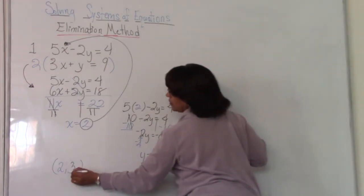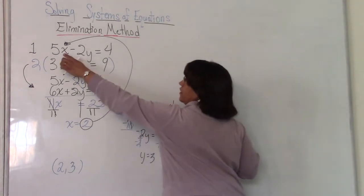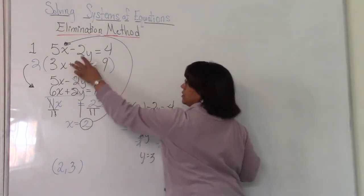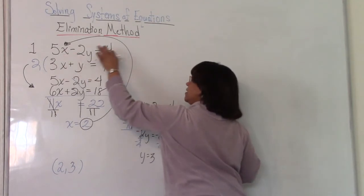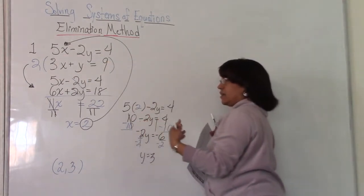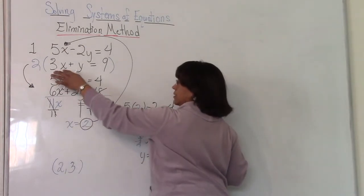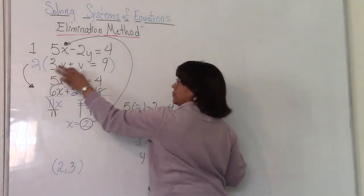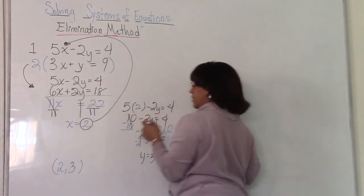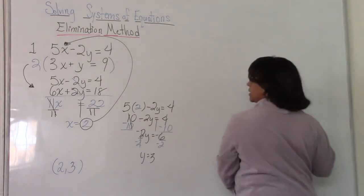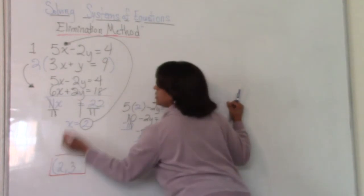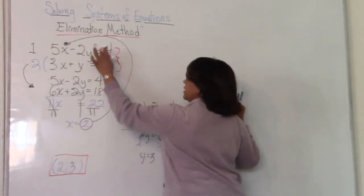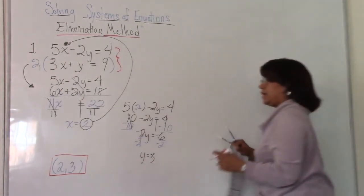I always like to check myself. So I'm going to go back here. 5 times 2 is 10. 2 times 3 is 6. 10 minus 6 is 4. Checks out so far. 3 times 2 is 6, and then y is 3. 6 plus 3 is 9. So that's correct. So this is the solution. 2, 3 is the solution to this system. That means that these two lines will cross at the ordered pair 2, 3.